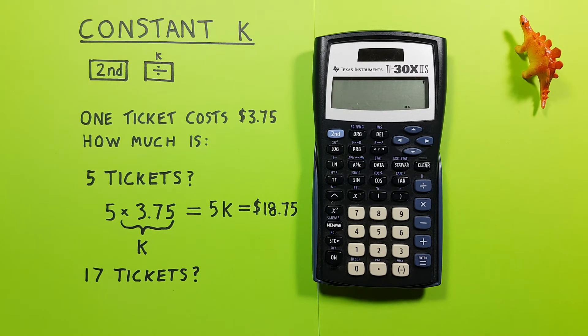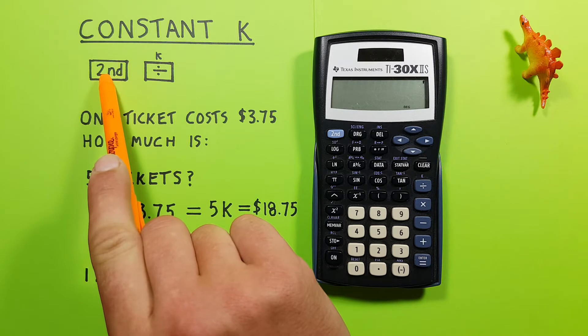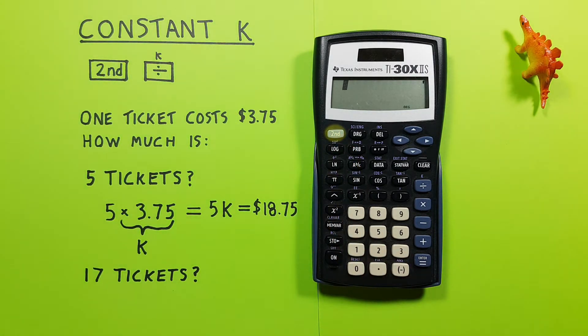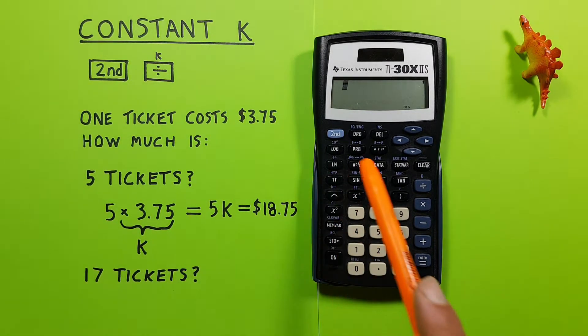To do this, we'll use the second function key that looks like this, located here. And the division key with the second function of K, or constant, that looks like this, located here.